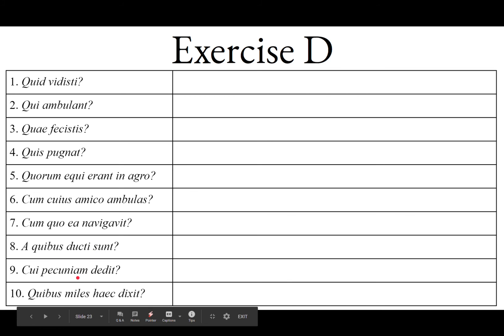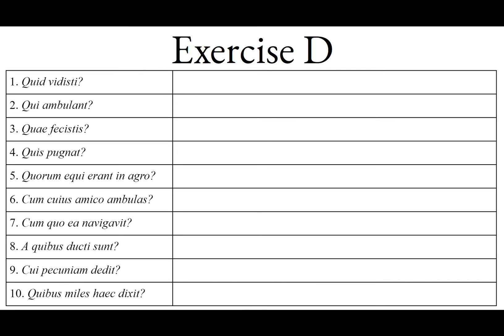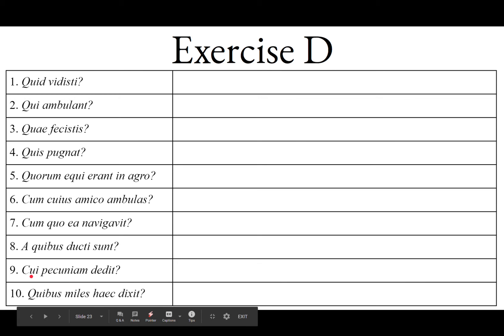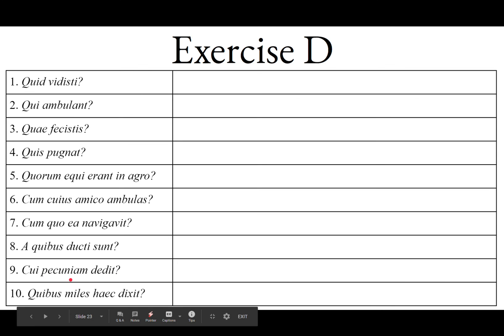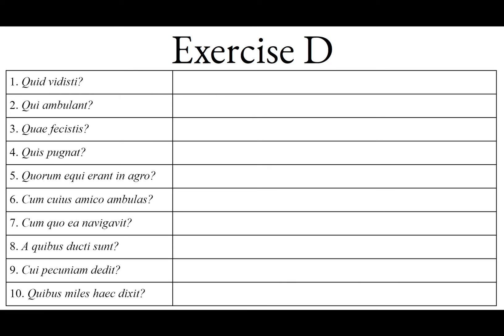Sententia nona: Cui pecuniam dedit? Cui is the dative singular — to whom? Notice if we made that plural it would be quibus pecuniam dedit, and English would not be able to tell the difference. To whom did he give the money? Pecuniam is the direct object; cui is the dative indirect object. To whom did he give the money?